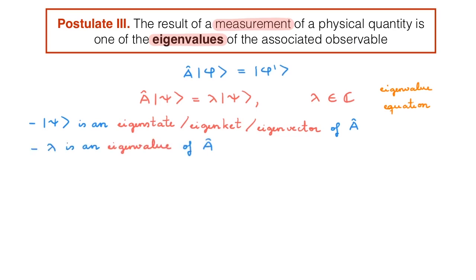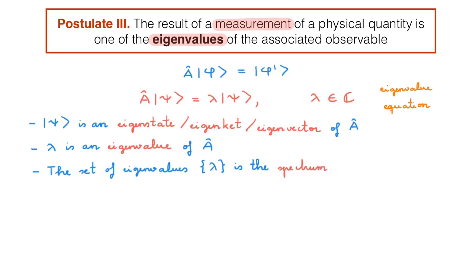The prefix 'eigen' that we use for all these quantities comes from German and it means 'proper' or 'characteristic'. This is because the eigenvectors of an operator are those special directions in the vector space which the operator doesn't change. A final definition that we need is that the set of eigenvalues lambda is called the spectrum of the operator A.